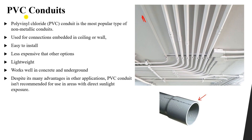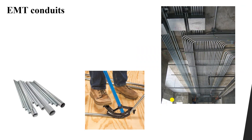We should not use PVC conduit in areas directly exposed to sunlight. If cables are in open air and exposed to direct sunlight, PVC should not be used, because sunlight can break down this material over time. That's why PVC conduits are not suitable for applications exposed to sunlight.